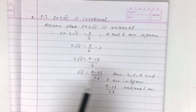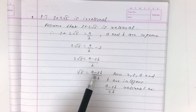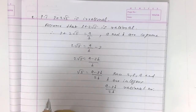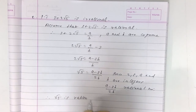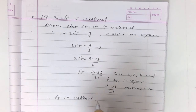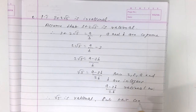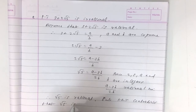So root 5 equals A minus 3B by 2B, which is a rational number. Therefore root 5 is rational. But this contradicts the fact that root 5 is irrational, which we proved in the first question.